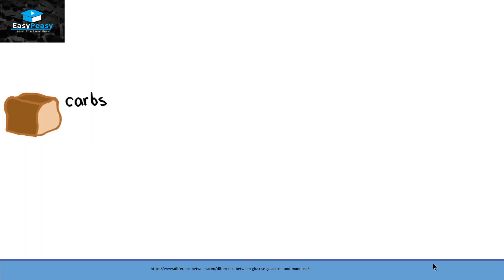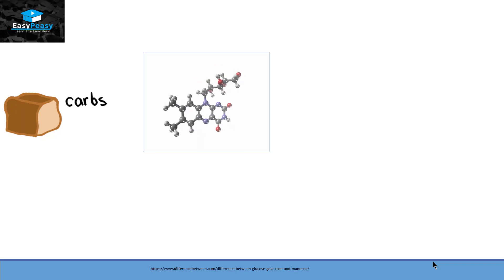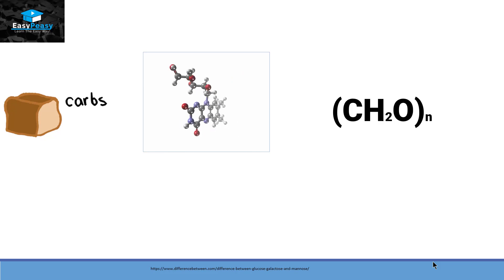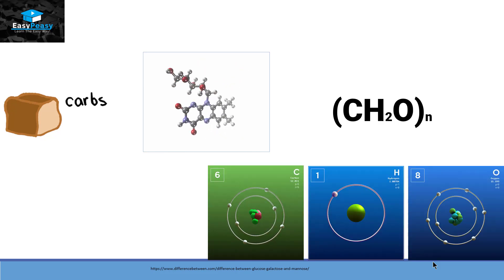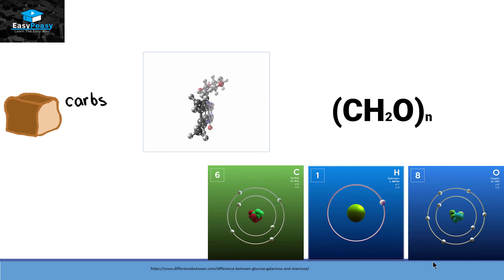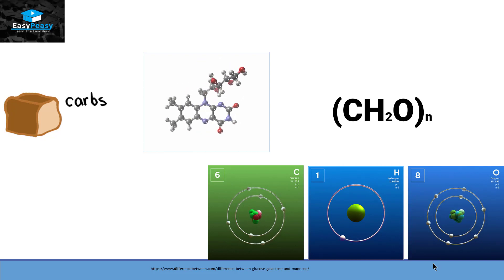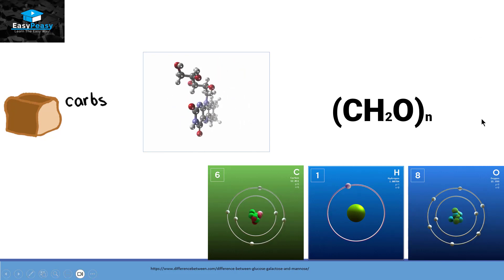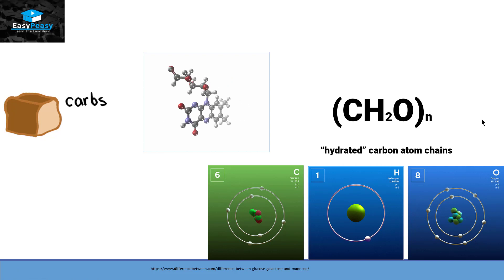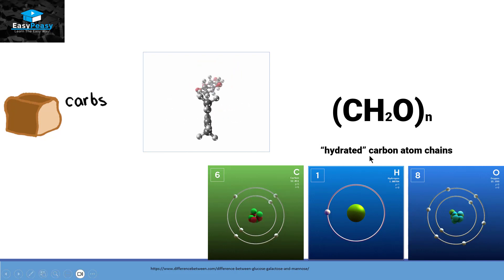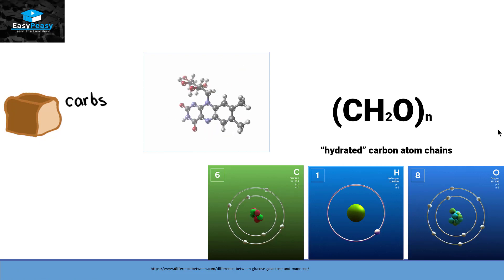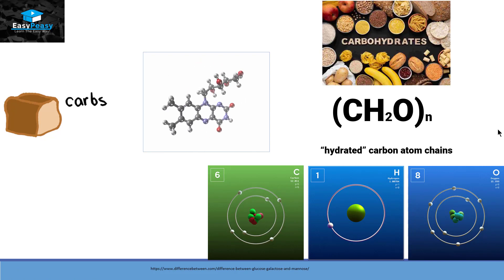Now the carbohydrates that we take in as food — if we look at the molecules of these carbohydrates, they are made up of three atoms: carbon, hydrogen, and oxygen. Their molecular formula is CH₂O, where n represents the number of carbon atoms. So they are basically called as hydrated carbon atom chains by looking at this formula, and because of this, these molecules are called as carbohydrates.